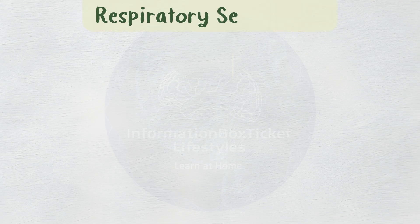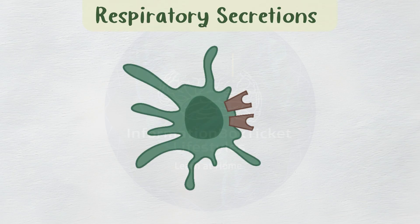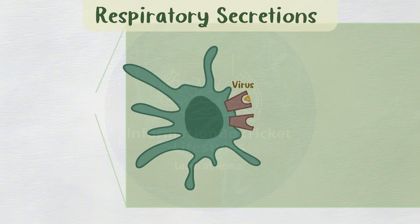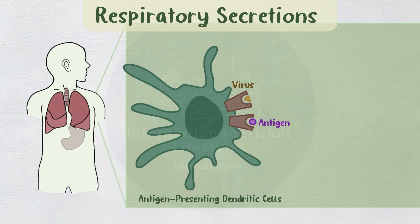HHV-6 infection begins when an individual comes into contact with respiratory secretions from a virus-carrying individual. Once within the body, the virus binds to antigen-presenting dendritic cells, which are abundant in the lungs, stomach, intestines, nose, and skin. These cells process antigens like viral proteins and present them on the cell surface to T cells.